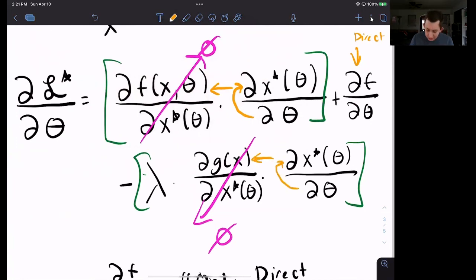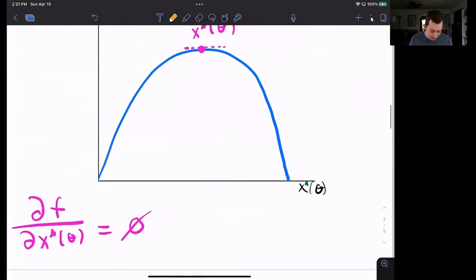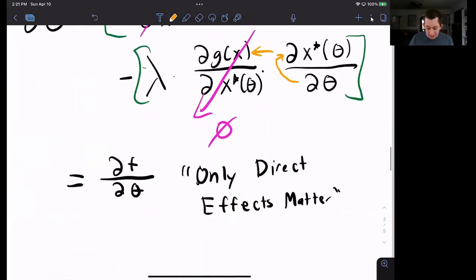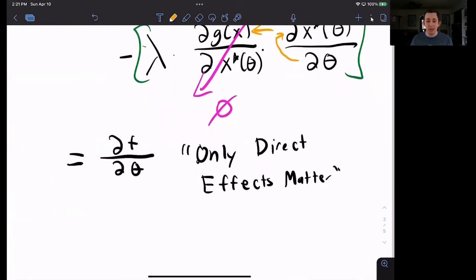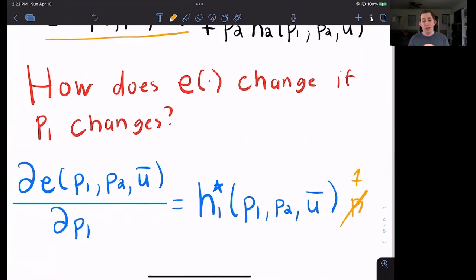Theta affects x star, which then affects g. That is an indirect effect. And we say those don't matter because of the envelope theorem, because of this result right here. So that gets out as well. And we're left with df d theta.